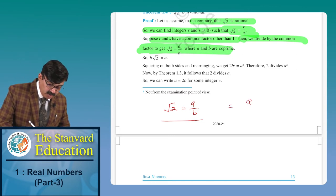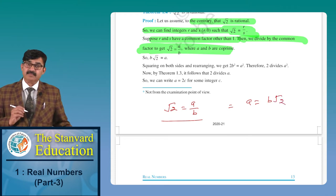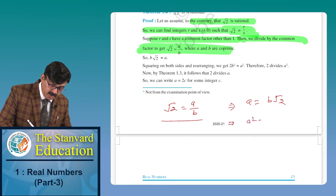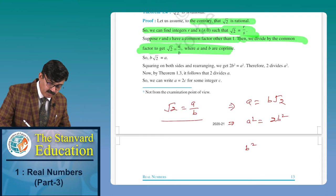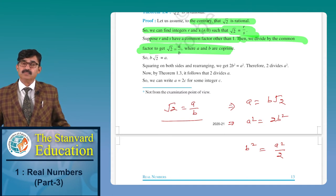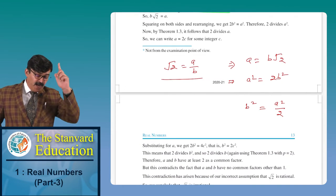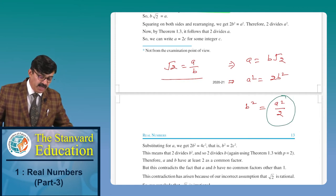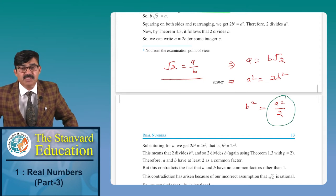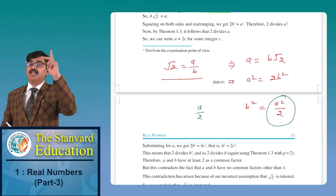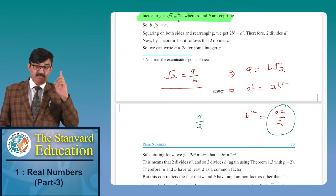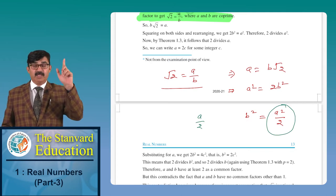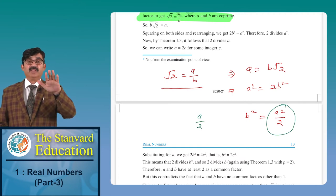Rearranging, A = B√2. Squaring both sides gives A² = 2B². This can also be written as B² = A²/2, which means A² is divisible by 2. By Theorem 1.3, since 2 divides A², 2 will also divide A. So we can assume A/2 = C, meaning A = 2C.